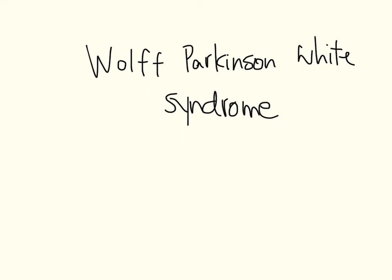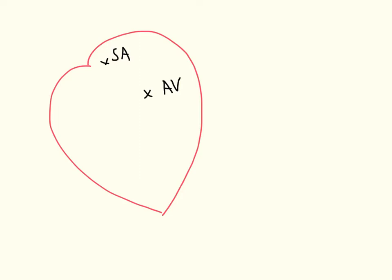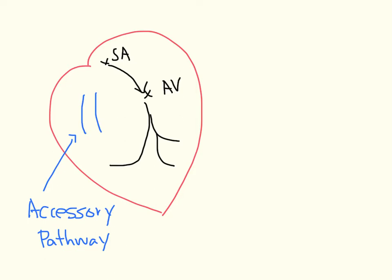This video will talk about Wolff-Parkinson-White syndrome. In the normal heart, impulses go from the SA node through the AV node down to the ventricles. In Wolff-Parkinson-White syndrome, there is an accessory pathway. Most of these pathways will allow impulses to either go up or down through it.